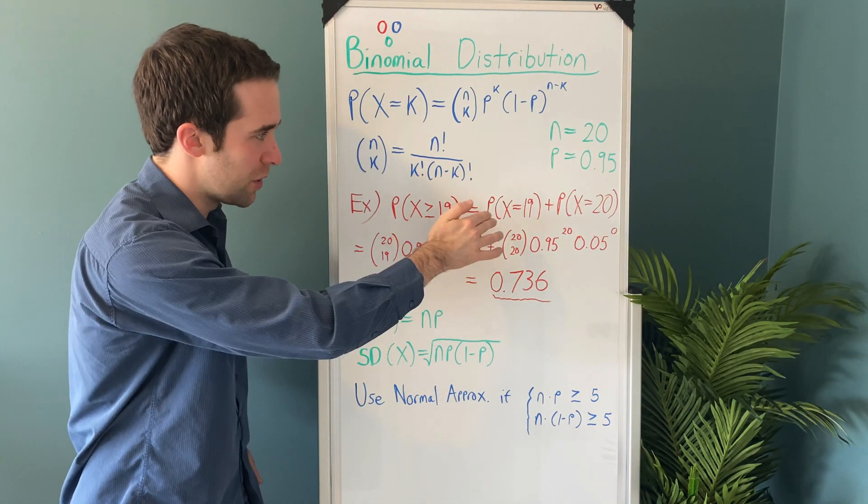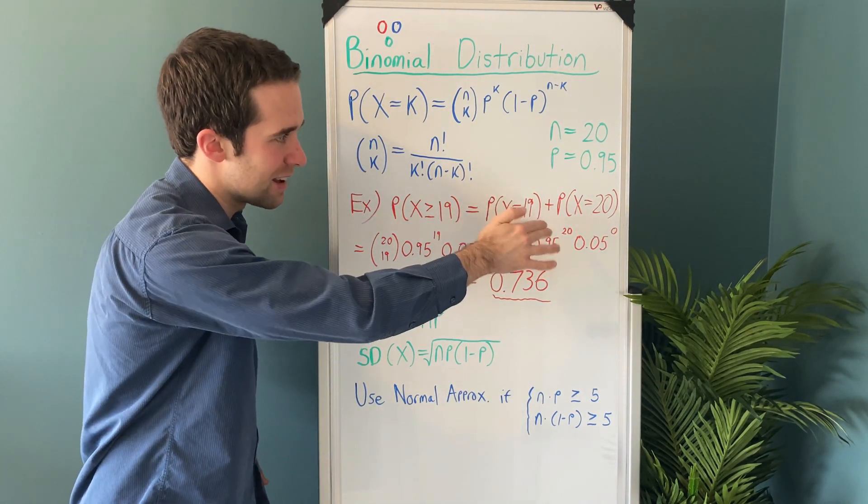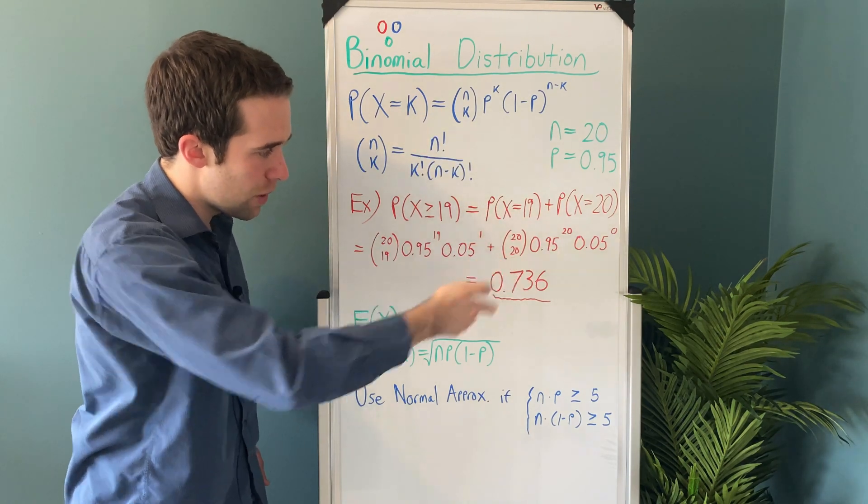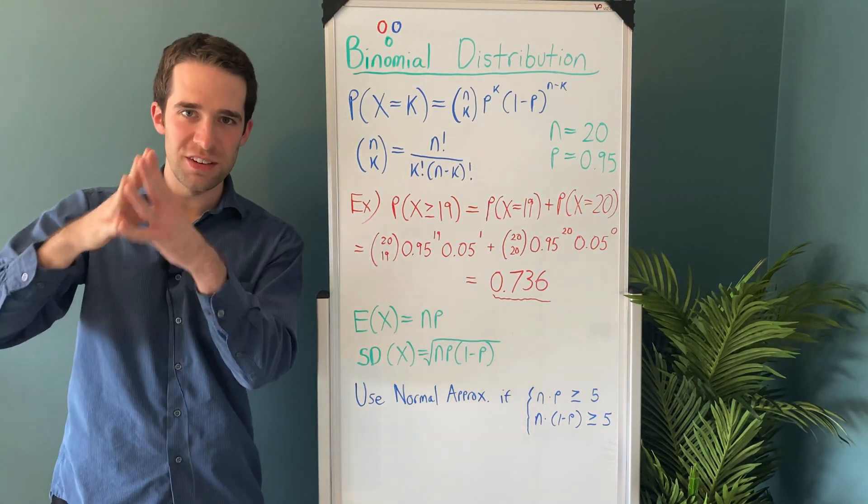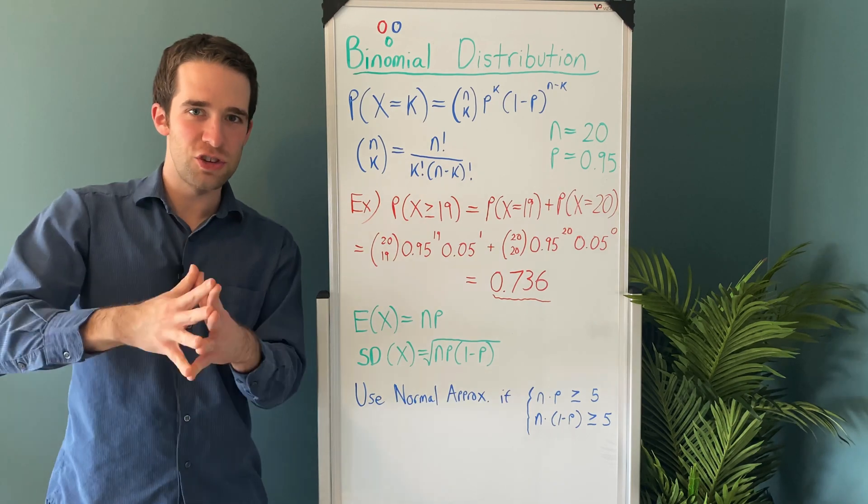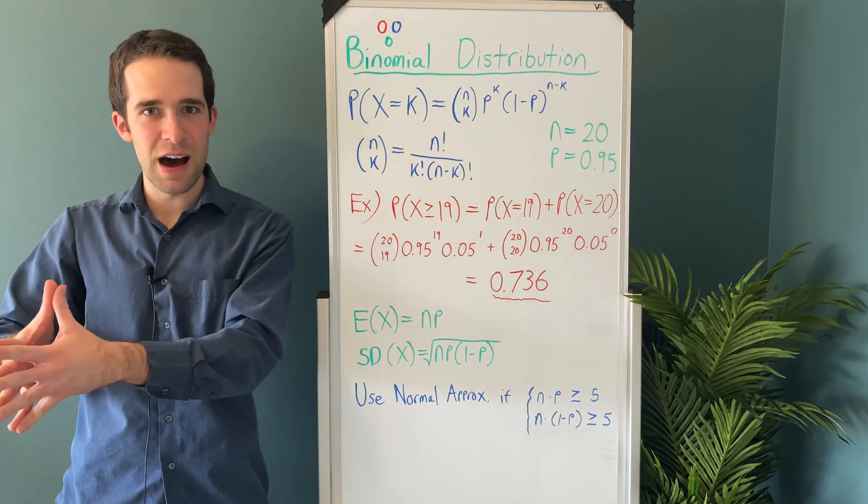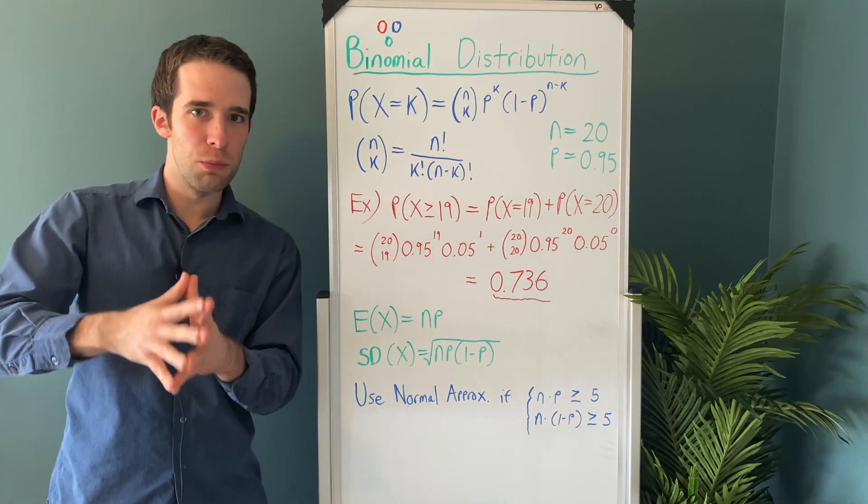we solve for the probability x equals 19, probability x equals 20, add them up, and we get a probability of 0.736. This is the chance that no more than one person dies. Equivalently 19 or more people survive.